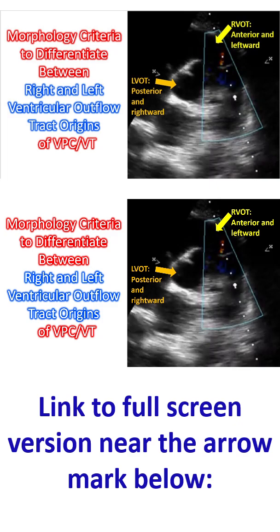Outflow tract ventricular arrhythmias are the most common type of idiopathic ventricular arrhythmias. They typically occur in young patients. Differentiating between right ventricular outflow tract and left ventricular outflow tract origins of ventricular premature complexes or ventricular tachycardia is a fundamental task in clinical electrophysiology, as it dictates the procedural approach — whether to use the venous approach or the arterial approach for catheter ablation.